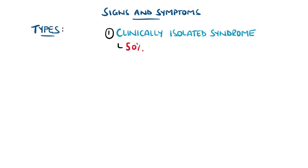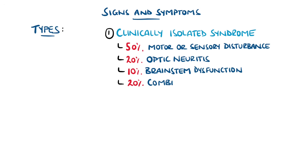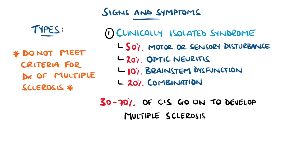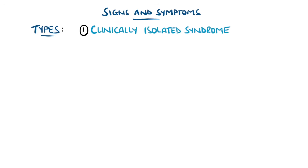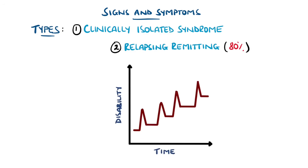Overall, four main phenotypes exist. The disease typically begins as a clinically isolated syndrome, with nearly half of patients experiencing motor or sensory disturbances, 20% optic neuritis, 10% brainstem dysfunction, and around 20% a combination of the above. Those in this category do not fulfill the full criteria for an MS diagnosis, but up to 70% will go on to develop multiple sclerosis. Of those who are subsequently diagnosed, 80% will have a relapsing-remitting pattern.